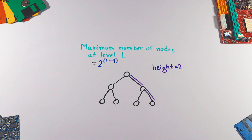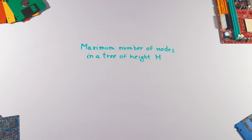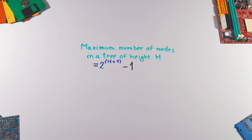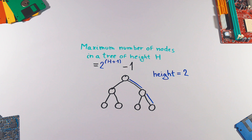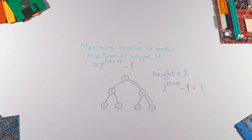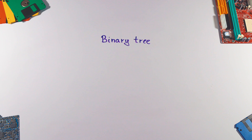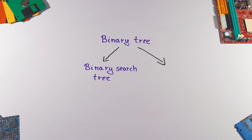For a tree of height 2 — where height is the number of edges from the root to the deepest leaf — the maximum number of nodes at level 3 is 4. The maximum number of nodes in a tree of height h is 2 to the power h+1 minus 1, so for a tree of height 2 the maximum number of nodes is 7. Binary trees are used to implement binary search trees and binary heaps, but more on those in future videos.